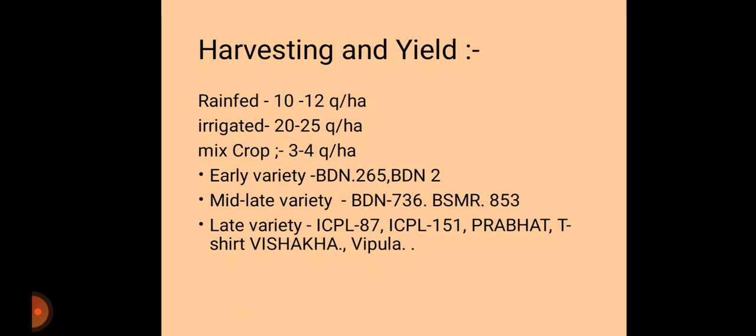The yield of pigeon pea under rainfed conditions is 10 to 12 quintals per hectare, while irrigated crops give 20 to 25 quintals per hectare. Under mixed cropping systems, production is about 3 to 4 quintals per hectare. Important varieties include: early varieties — BDN 2, BDN 256, BDN 65; mid-late varieties — BDN 736, BSMR 853; and late varieties — ICPL 87, ICPL 151, Prabhat, T-21, Visakha, and Vipula.